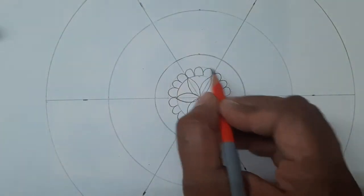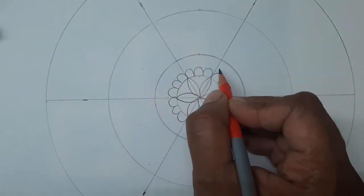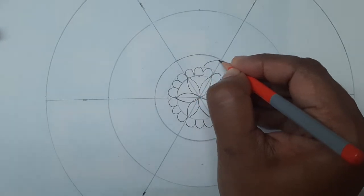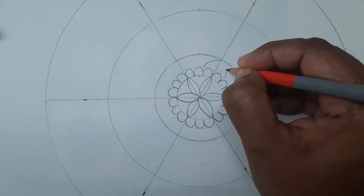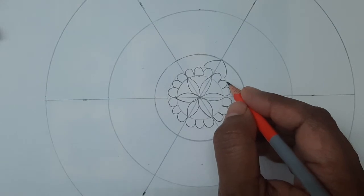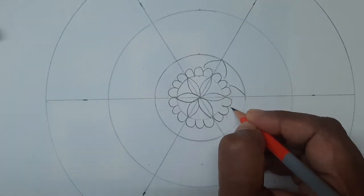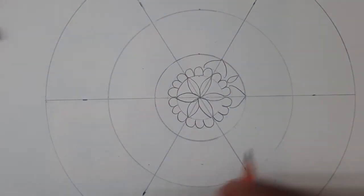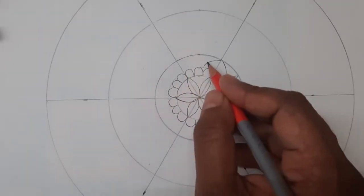In the third circle, I'm taking any two grids. In this grid, this is the pattern I'm going to draw. I'm leaving the center petal here. This is how I'm going to fill in the third circle.